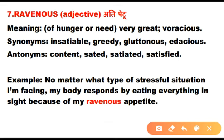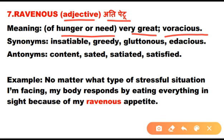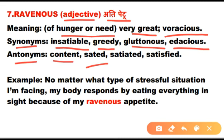Number seven is ravenous. Ravenous is an adjective meaning extremely hungry — having a very great and voracious hunger. Synonyms: insatiable, greedy, gluttonous, edacious. Antonyms: content, satiated, satisfied. Example: No matter what stressful situation I face, my body responds by eating everything in sight because of my ravenous appetite.